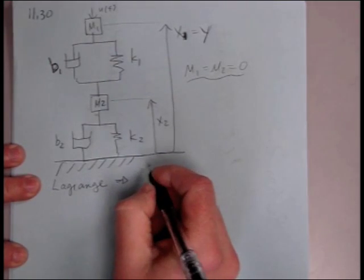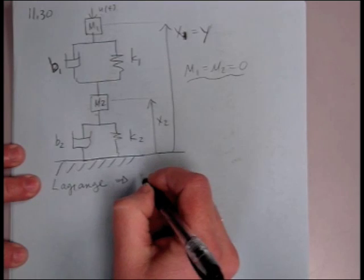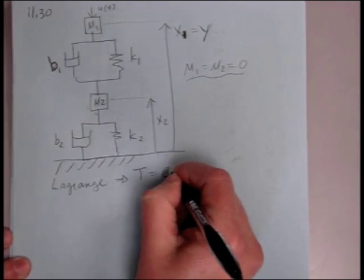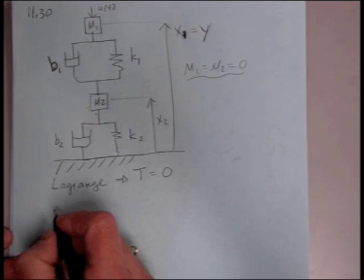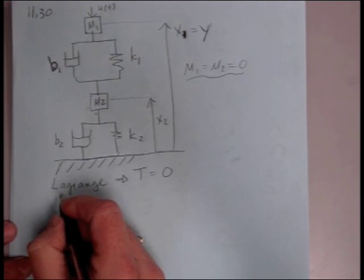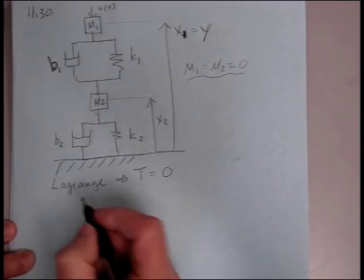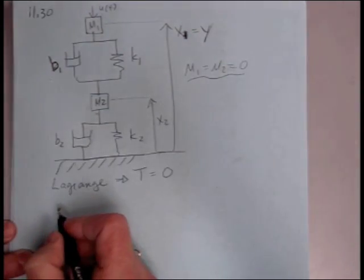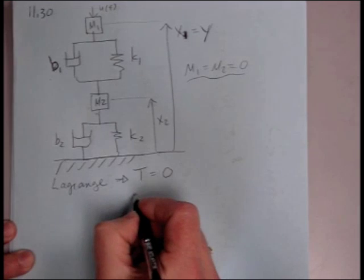That means, then, in our Lagrange equations, that our T, our kinetic energy, is just going to be 0. All right, so that makes that part easier, I suppose. And also, then, our gravity, which would be mgh, that's also going to be 0. So we won't have any gravity terms in our potential energy.